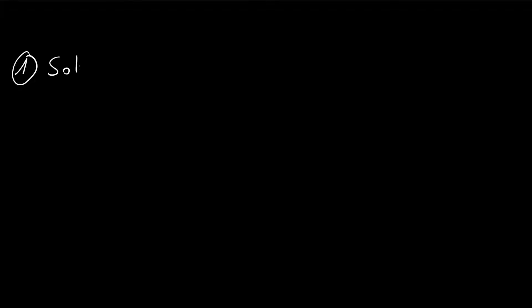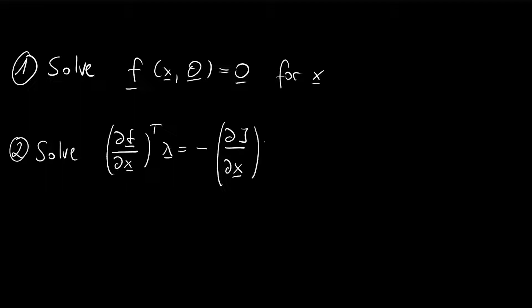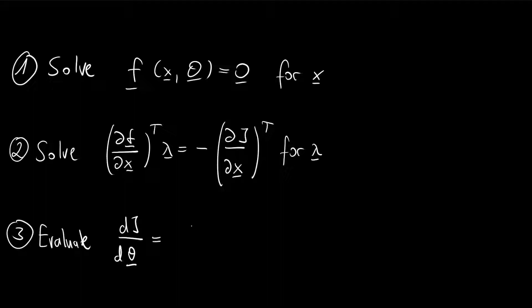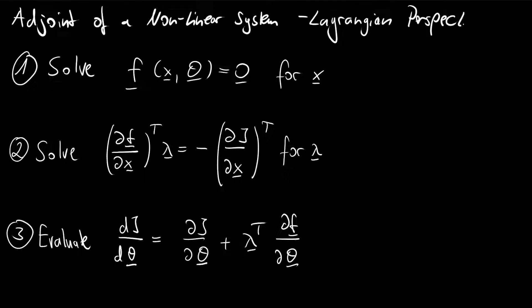In the last video we identified the sensitivity calculations using the adjoints as a three-stage process. We first solved a classical non-linear system, then we solved the adjoint linear system, and in the last third step we evaluate the sensitivities. In the last video we used implicit differentiation; in this video we want to use the Lagrangian perspective, which yields exactly the same result.